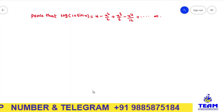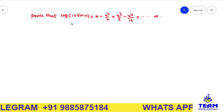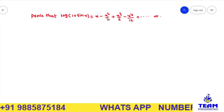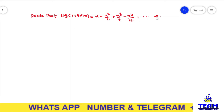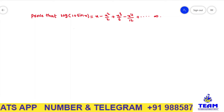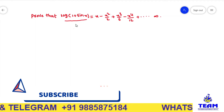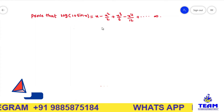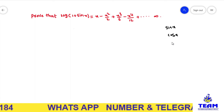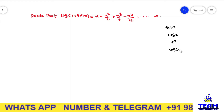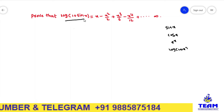Hi friends. In this video we are solving a problem on Maclaurin series. The given problem is: prove that log of 1 plus sin x is equal to x minus x squared by 2 plus x cubed by 6 minus x to the power of 4 by 12 plus so on. We have to expand log of 1 plus sin x, and we previously know the expansions of sin x, cos x, e to the power of x, and log of 1 plus x.